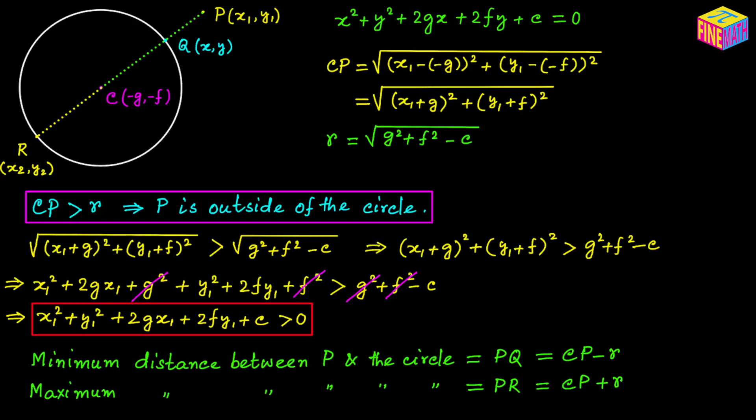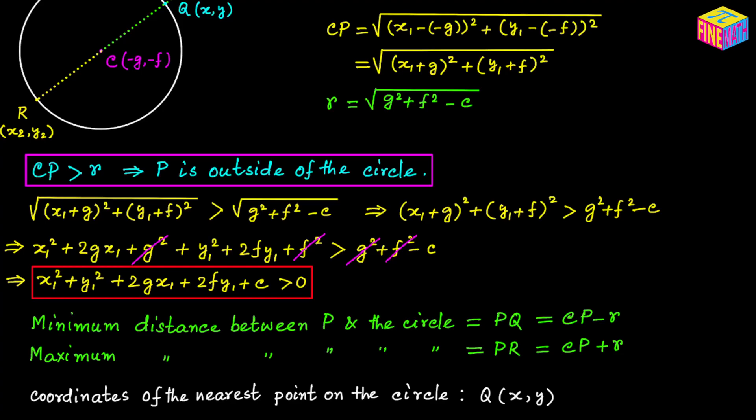Next, let's see how to calculate the coordinates of the nearest point on the circle, which is point Q. To find the coordinates of Q, we can use the section formula because we know the coordinates of C, the coordinates of P, and we know CQ = R (the radius) and PQ = CP − R.